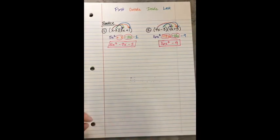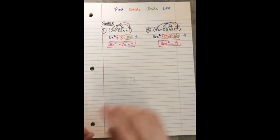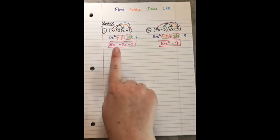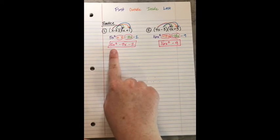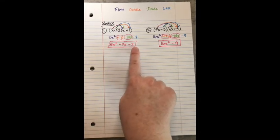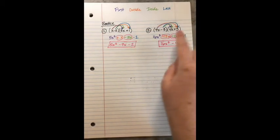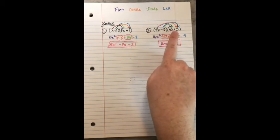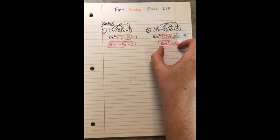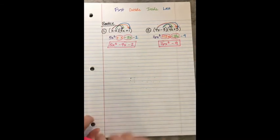Most of the time when you multiply two binomials you'll get a trinomial — three terms — as your answer. But every once in a while, depending on the case, you'll get a binomial out of it if something cancels.